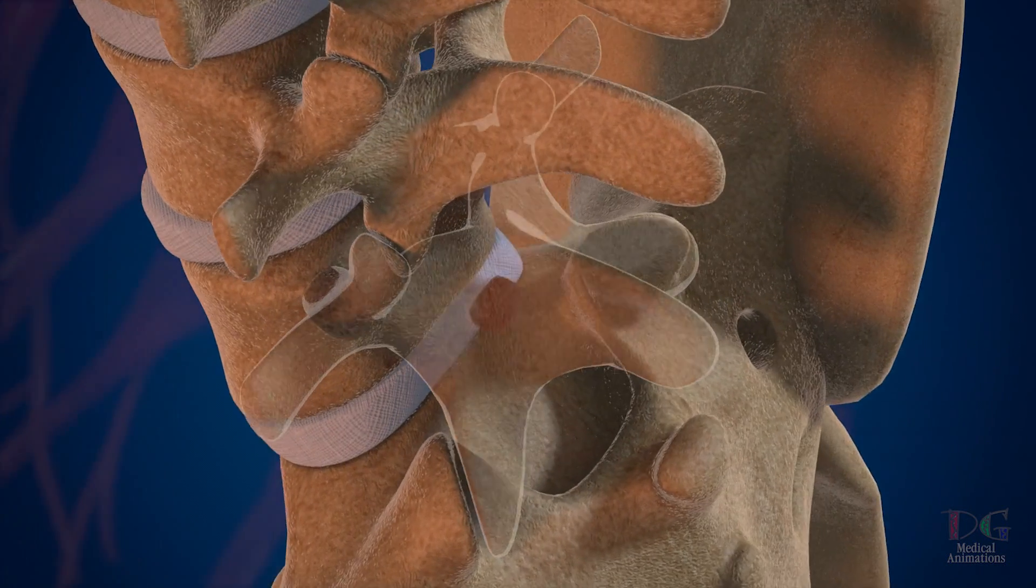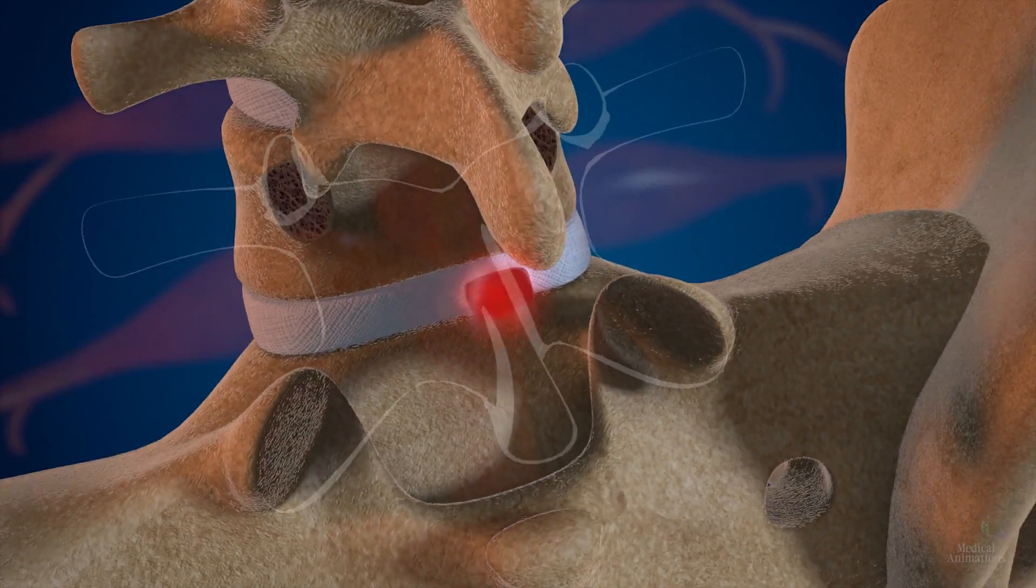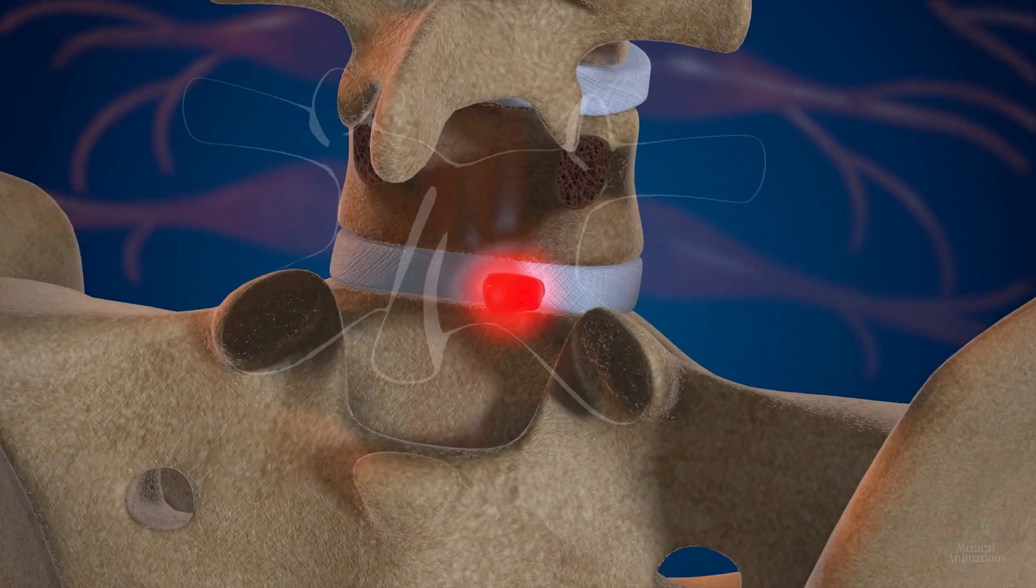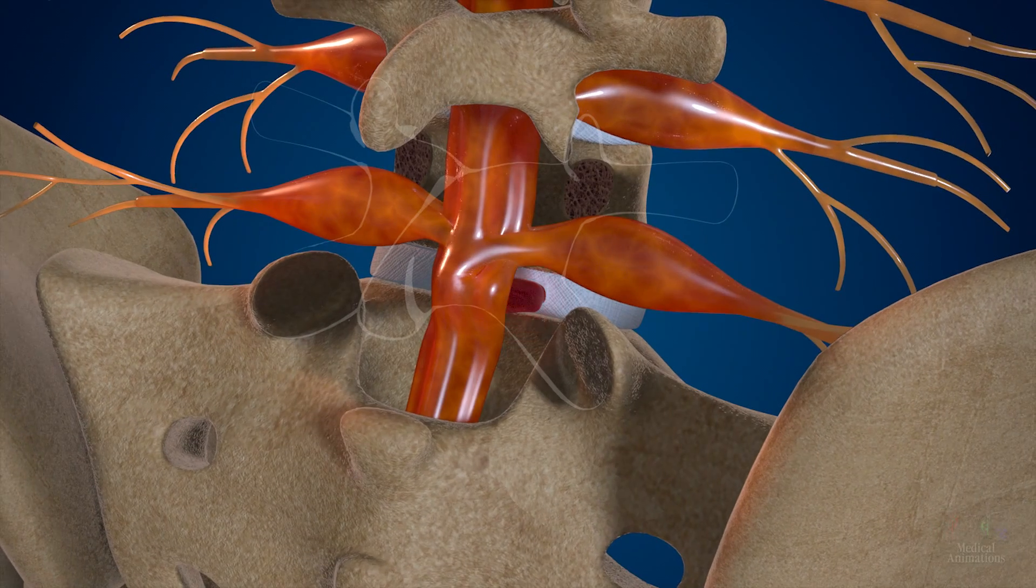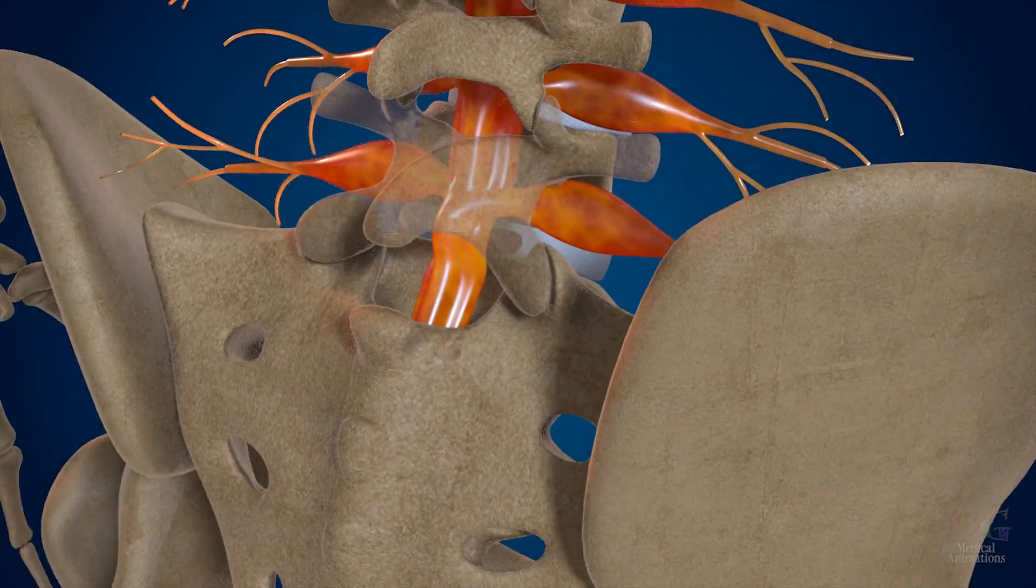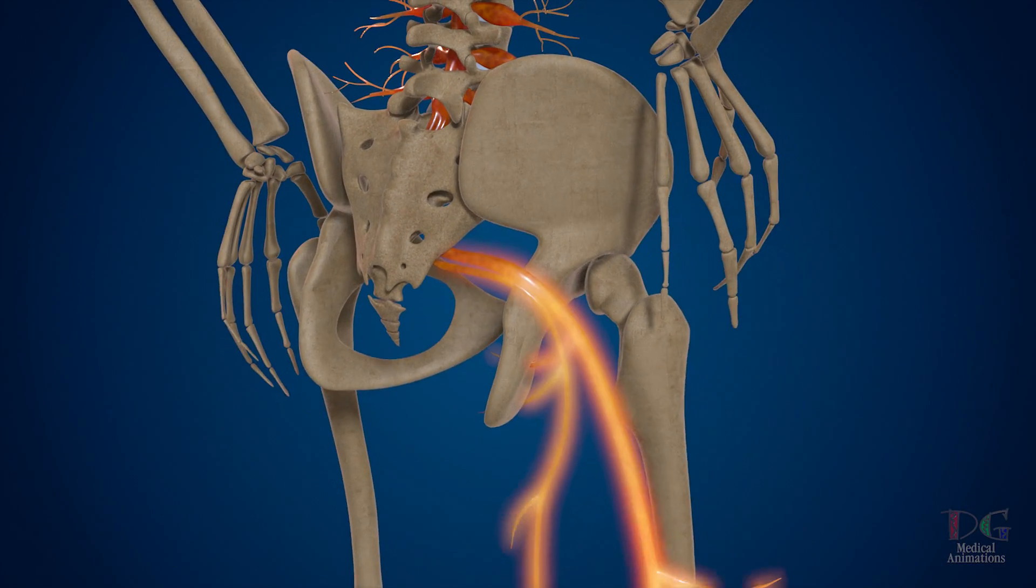A microdiscectomy is typically indicated when a herniated, protruded, or extruded disc in your spine presses against a central nerve in your body, the root nerve, causing leg pain, numbness, or weakness.